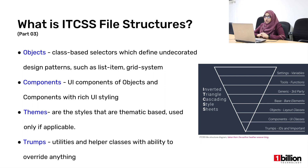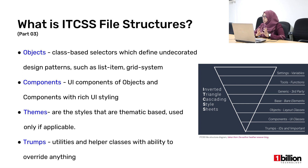Then you have the objects layer. In the objects layer we have something called undecorated design styles — this is when you want to create styles for layouts. For example, as I mentioned, a grid system. Sometimes you might have to have a grid system with four columns and three rows. Those kinds of layout styles would be included in the objects layer.